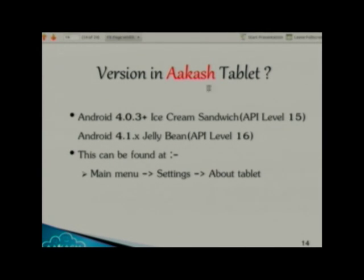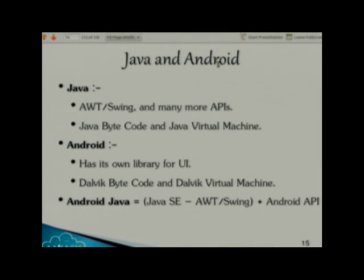The Akash tablet uses Ice Cream Sandwich and Jelly Bean versions — this can be found at Settings > About Tablet. Now, Java and Android: Android is totally based on Java, but there are subtle differences between Java and Android.